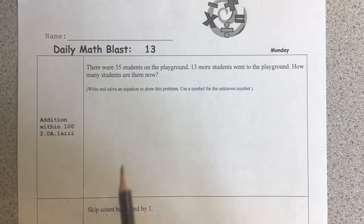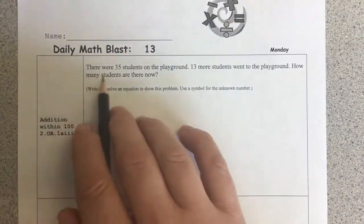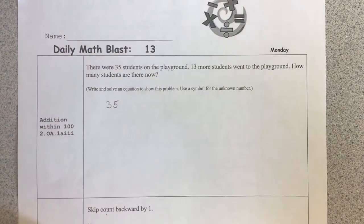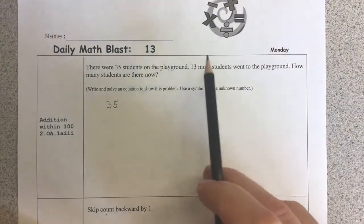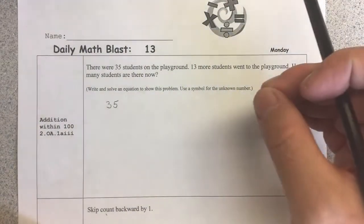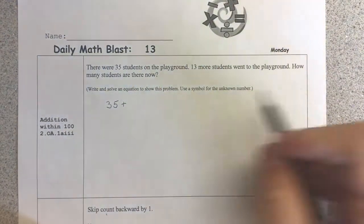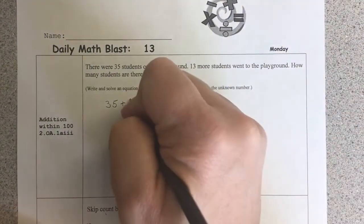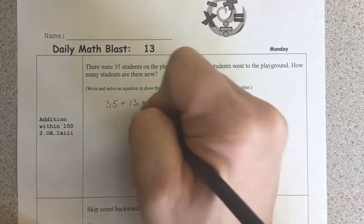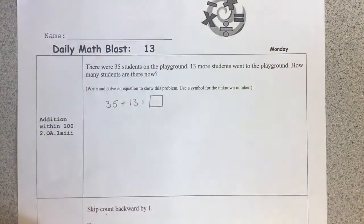So my first step is to write an equation that matches the story. There were 35 students on the playground, so 35 students on the playground. 13 more students went to the playground. The operation symbol that I would use to show more students joining would be plus, the addition symbol. 13 more, so 13. How many students are there now? So equal. I'm going to put my mystery box there.